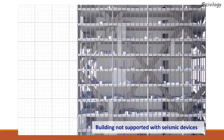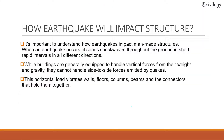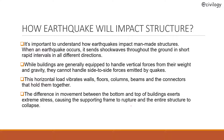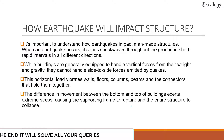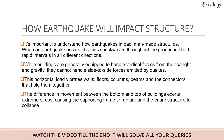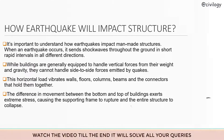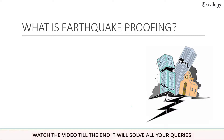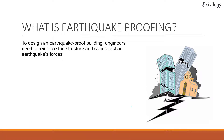This horizontal load vibrates walls, floors, columns, beams, and the connectors that hold them together. The difference in movement between the bottom and top of the building exerts extreme stress, causing the supporting frames to rupture and the entire structure to collapse.